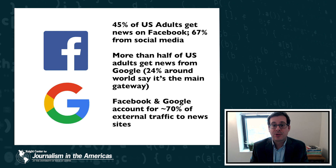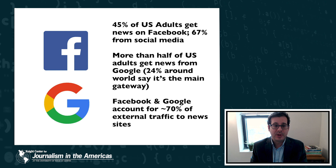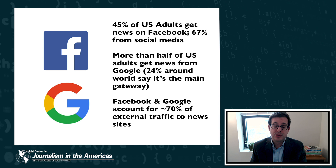Facebook and Google are really the 800 pound gorillas here. They run some of the most powerful and important curation algorithms in the world, which impact what billions of people see and interact with on a daily basis. 45% of U.S. adults get news on Facebook, more than half of U.S. adults get news from Google, and about a quarter of people around the world say that Google is the main gateway to news information for them. Facebook and Google also account for about 70% of the external traffic driven to news sites.